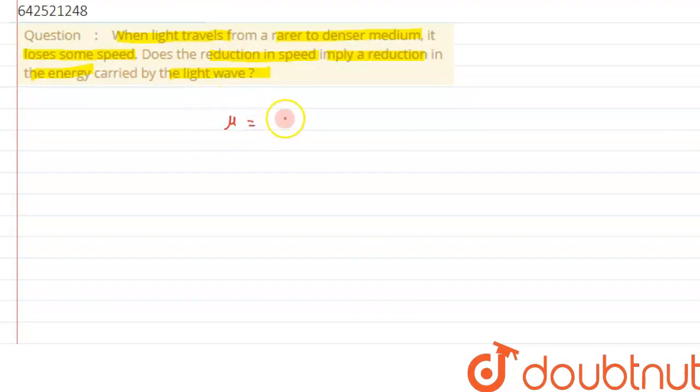Refractive index is inversely proportional to the velocity of light. So from this relation, we can see if velocity increases, refractive index will be less. And if refractive index is more, velocity will be less.